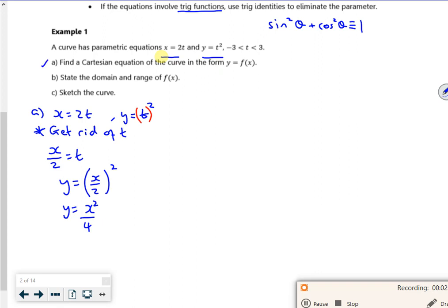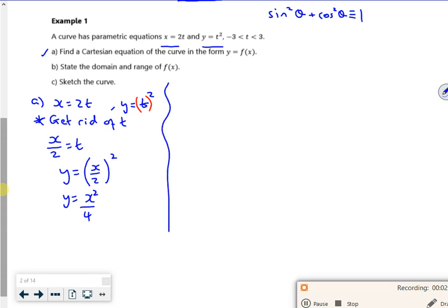It says state the domain and range of f(x). I know that minus 3 is less than t is less than 3. Using x equals 2t, the domain would be minus 6 is less than x is less than 6. So x belongs to the reals such that minus 6 is less than x is less than 6.